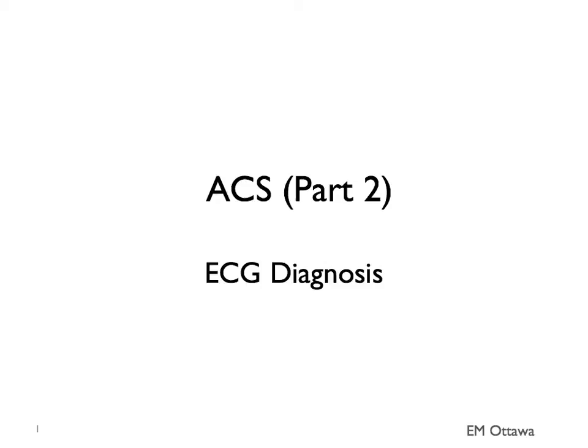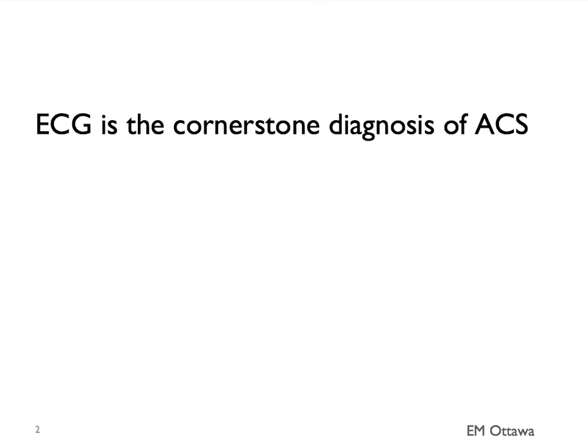Welcome back to ACS part 2. In this section we'll discuss how to use the ECG in a patient who you're suspecting of an ACS. ECG is the cornerstone of diagnosis for ACS. Keep in mind that if your first ECG did not show any abnormalities and the patient is still having symptoms, we often repeat it.